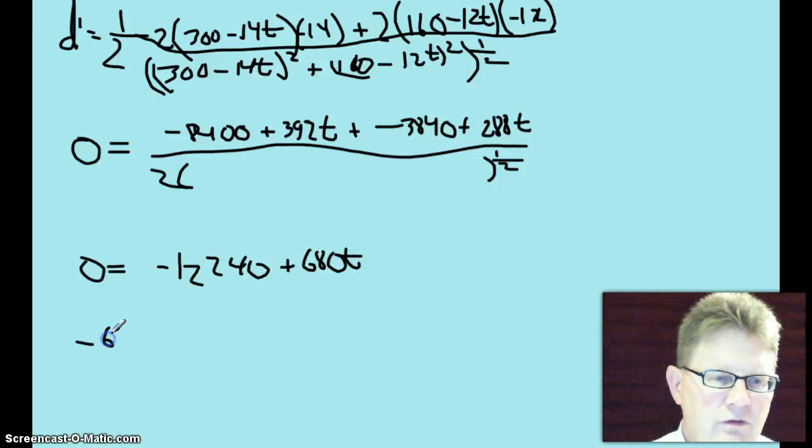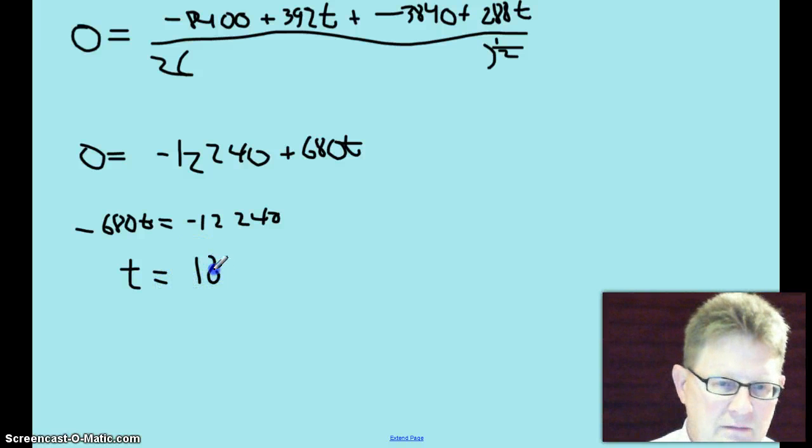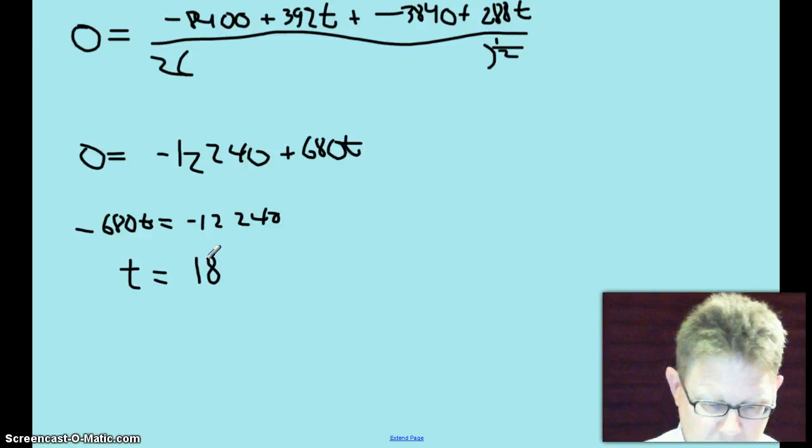Combine like terms in the numerator, and you get negative 12,240 plus 680t. Negative 680t equals negative 12,240. Sorry, it's not easy to read or write. T equals 18.